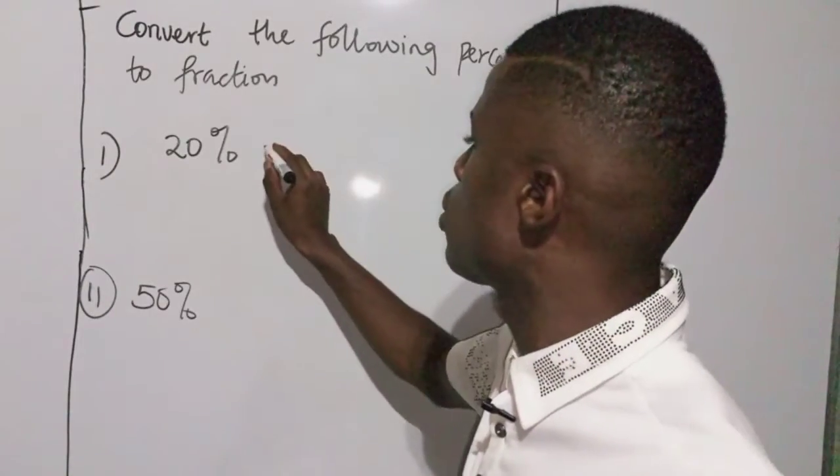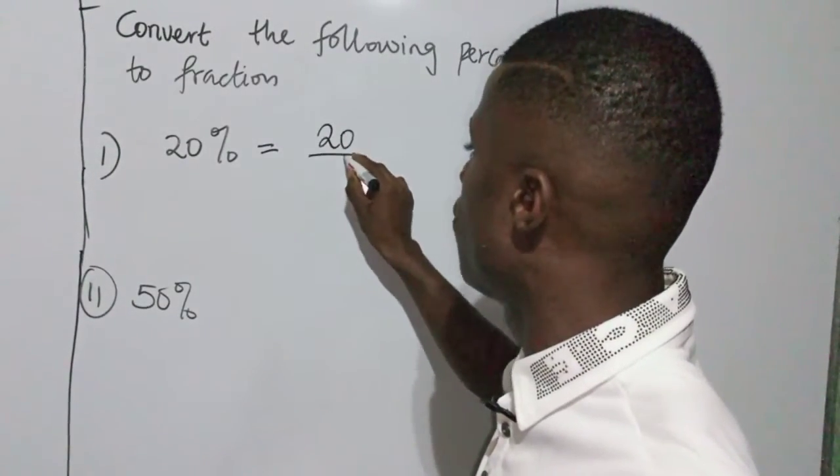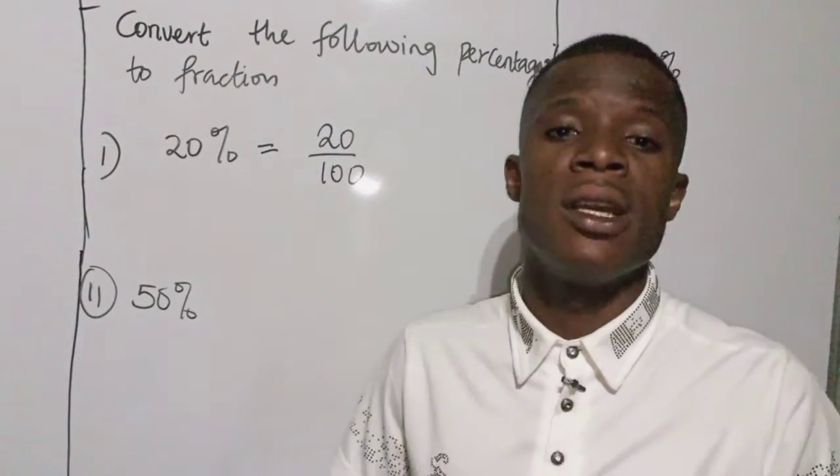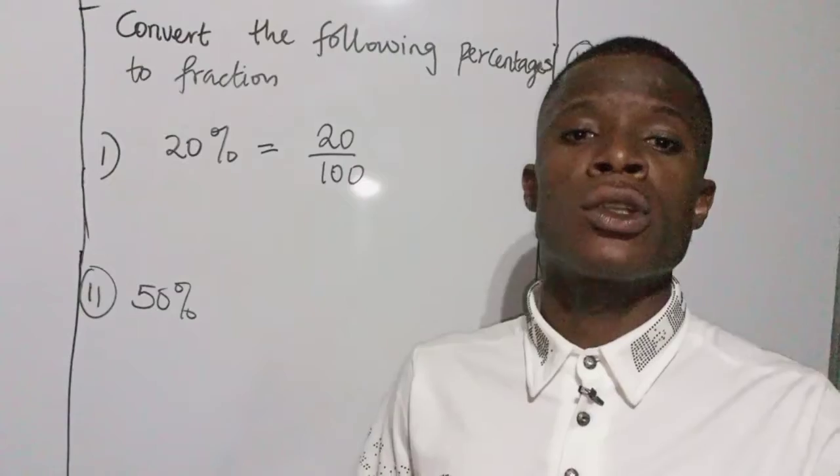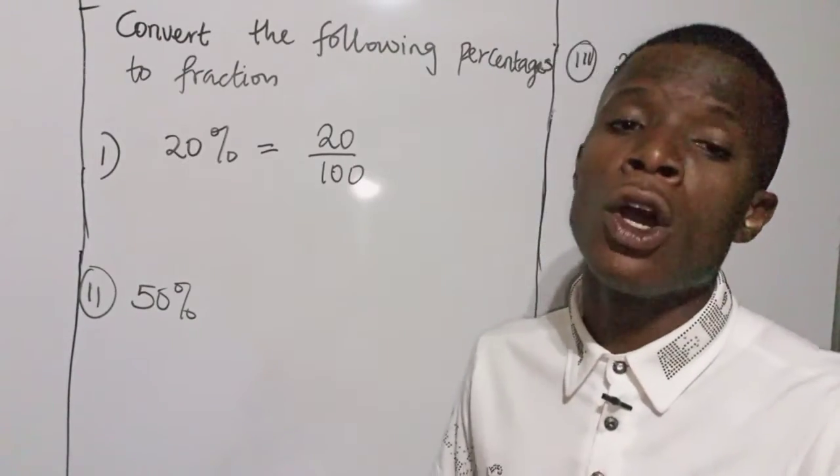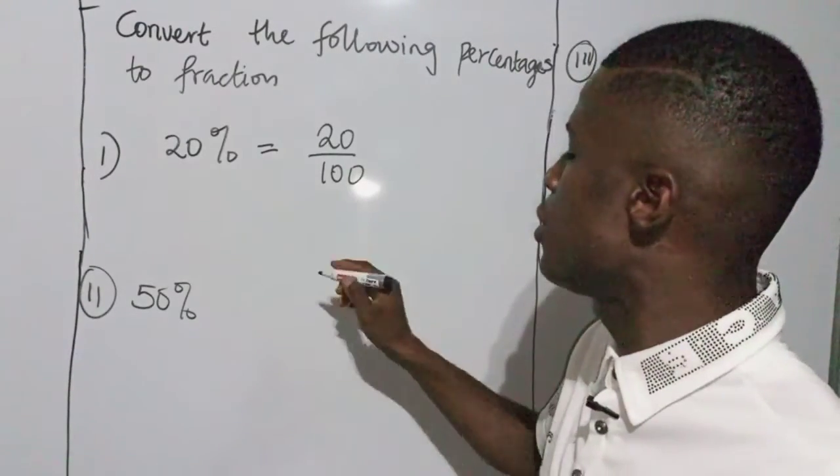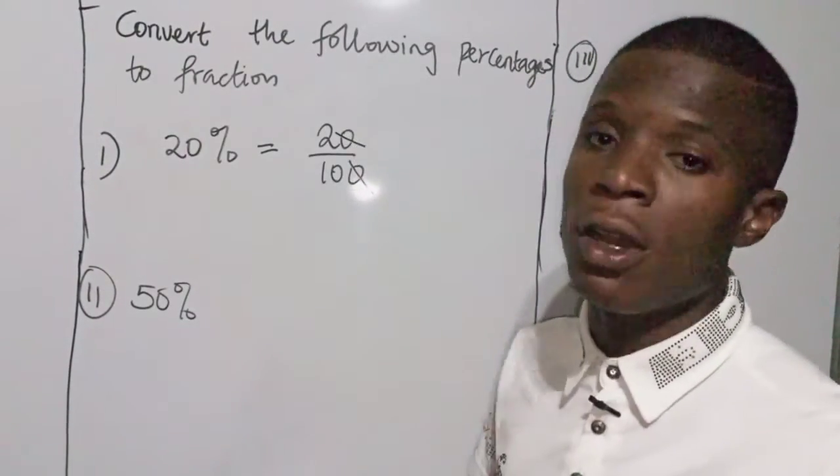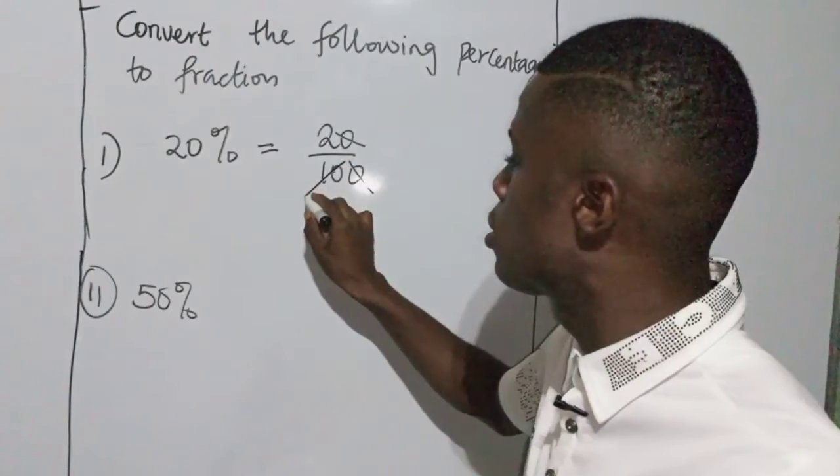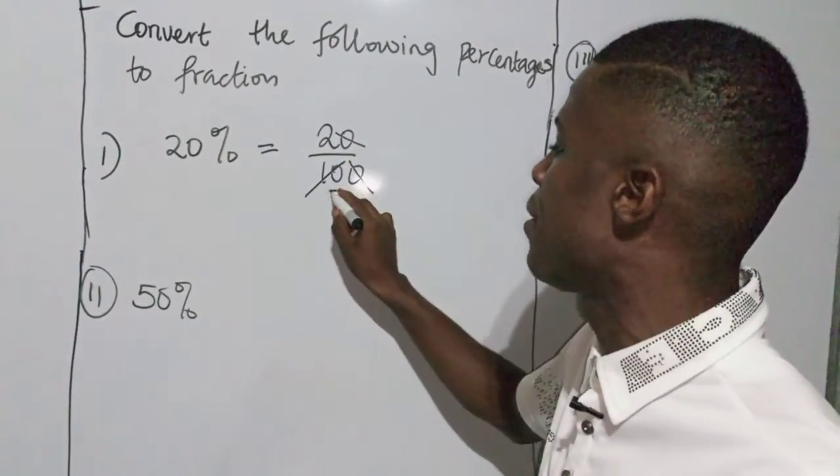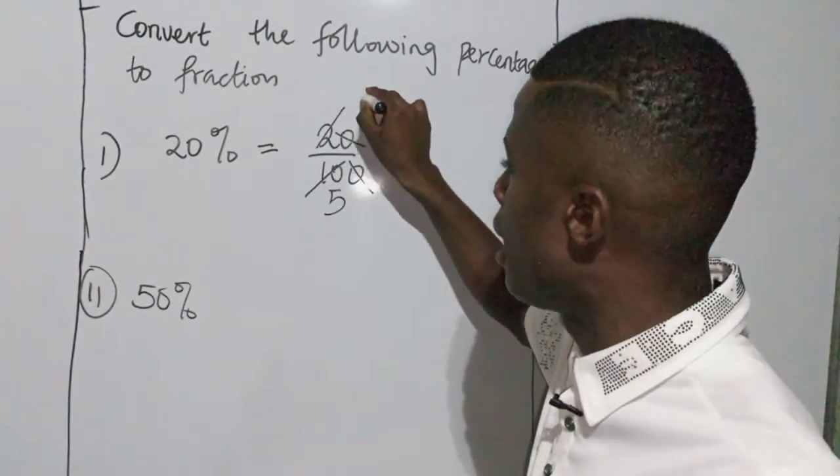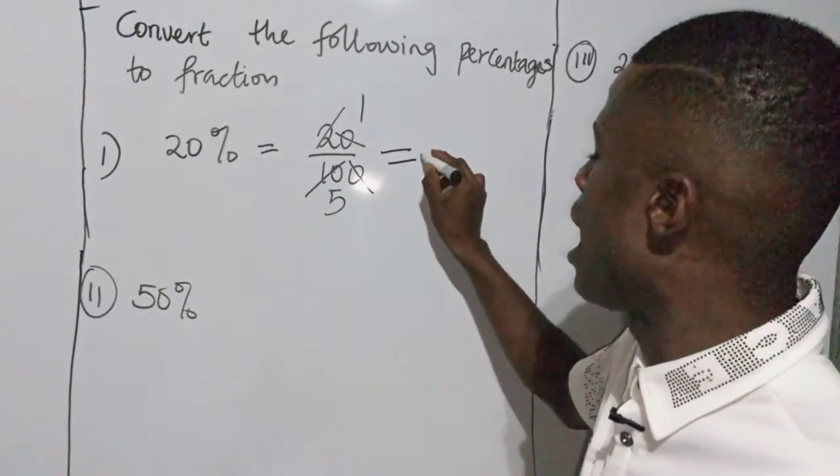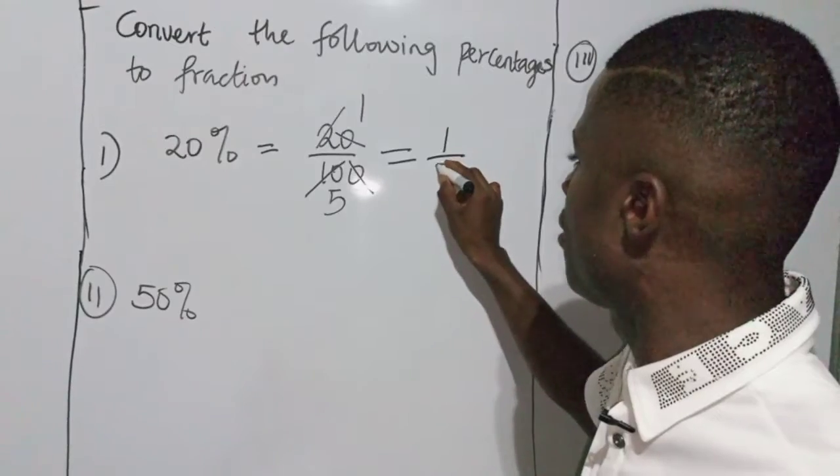So to reduce this, this zero cancels to itself, zero cancels to itself. Then dividing, I'm having five to divide, I'm having one. So at the last run I have it is one over five. So a fraction of one over five is equivalent to 20%.